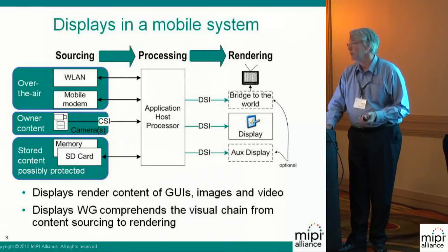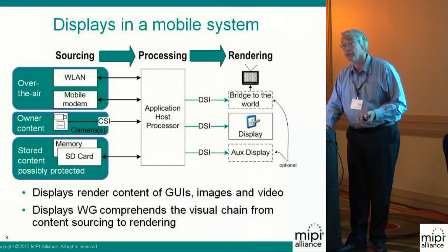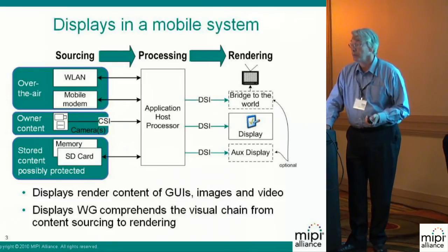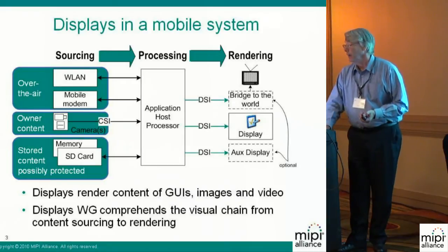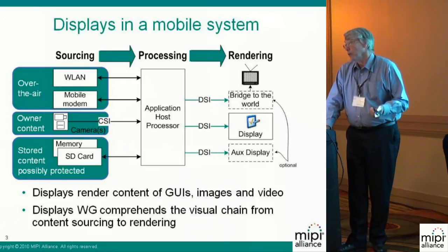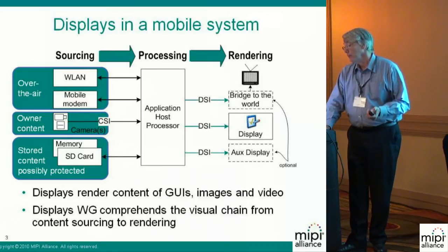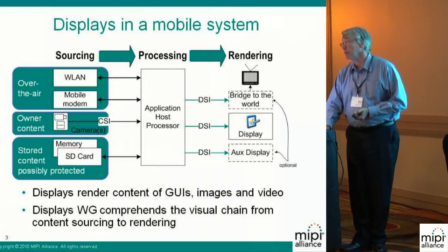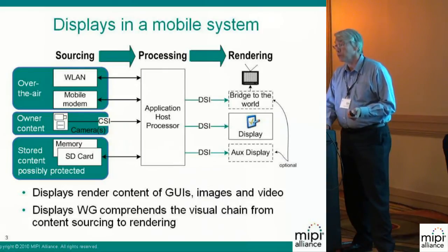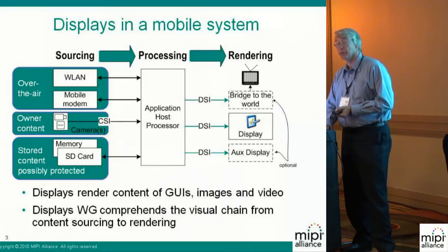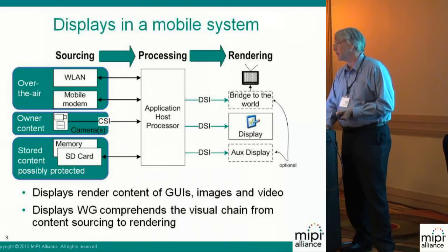You have over-the-air programming — sometimes even mobile TV, a very exciting area. That could be coming to you over the mobile modem or even through the wireless LAN network, and has to come in through a particular processor, generally with some decompression, and eventual rendering on your internal device. I could be over at my kid's soccer game taking video on my mobile phone — something unheard of just a few years ago — and display it right there. There's also stored content: I may want to download a movie and play it on an airplane. That content could be protected as well, which introduces another complexity into the equation.